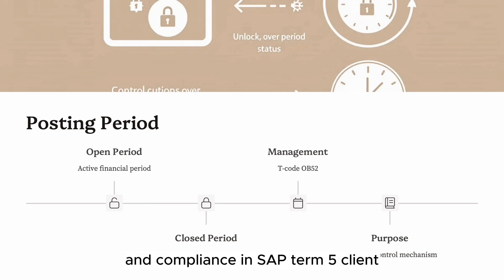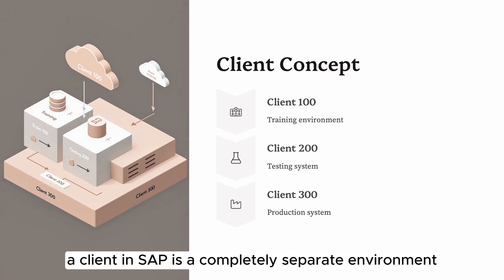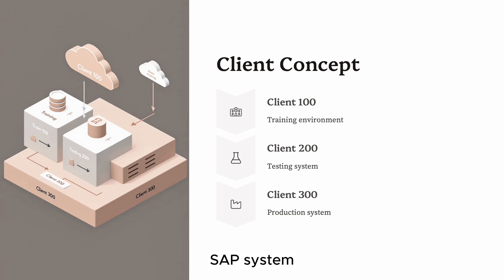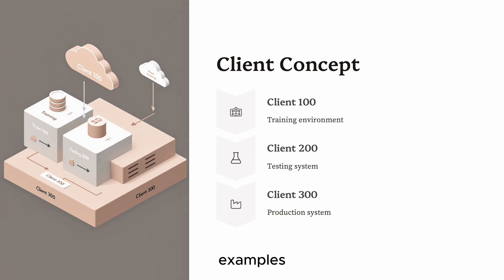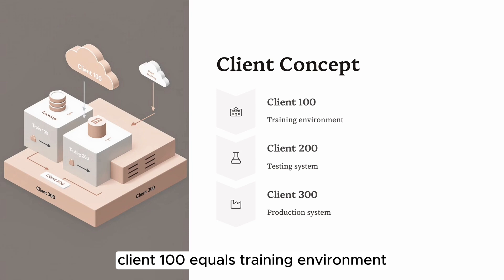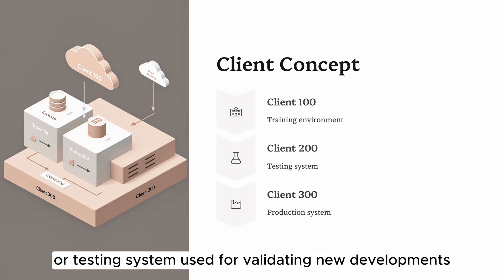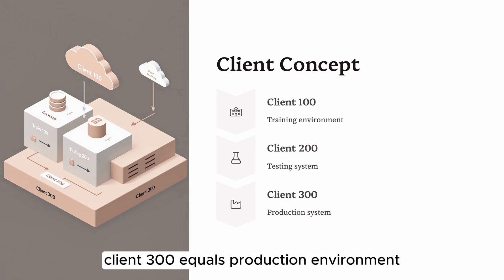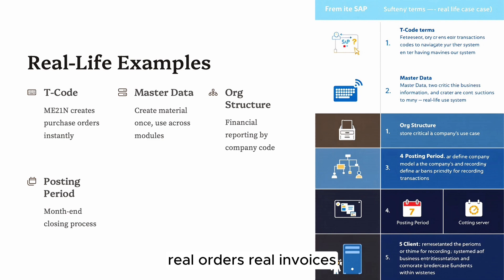Term five: the SAP Client Concept. A client in SAP is a completely separate environment — almost like having different companies within the same SAP system. Each client maintains its own data, configuration, and user roles. This concept allows businesses to separate development, testing, and production activities. Examples: Client 100 is a training environment where users can explore freely without risk; Client 200 is the quality or testing system used for validating new developments; Client 300 is the production environment where real business transactions occur. When you're in Client 300, every click has real-world consequences — real orders, real invoices. In Client 200 or 100, you can test and train without risk.